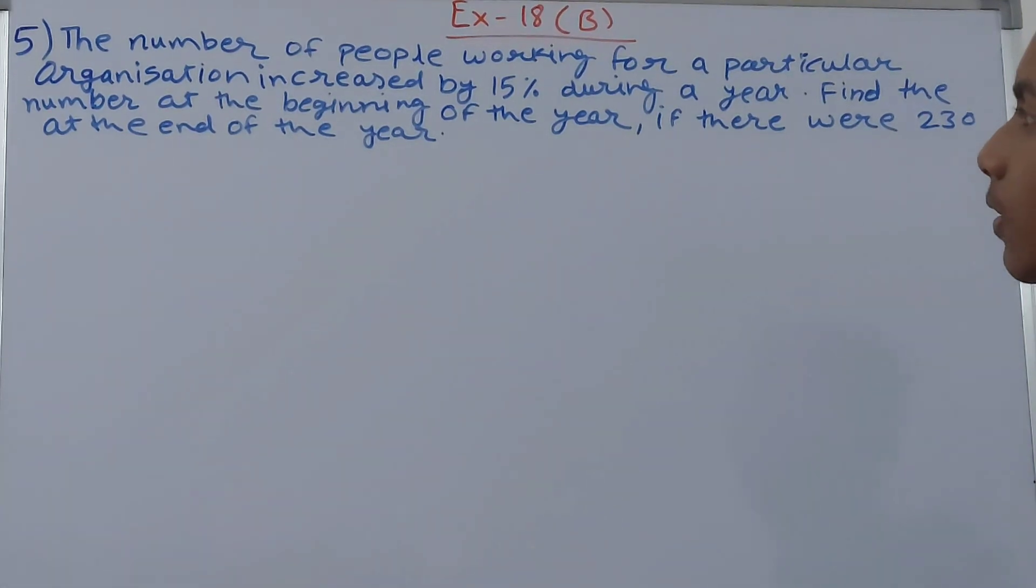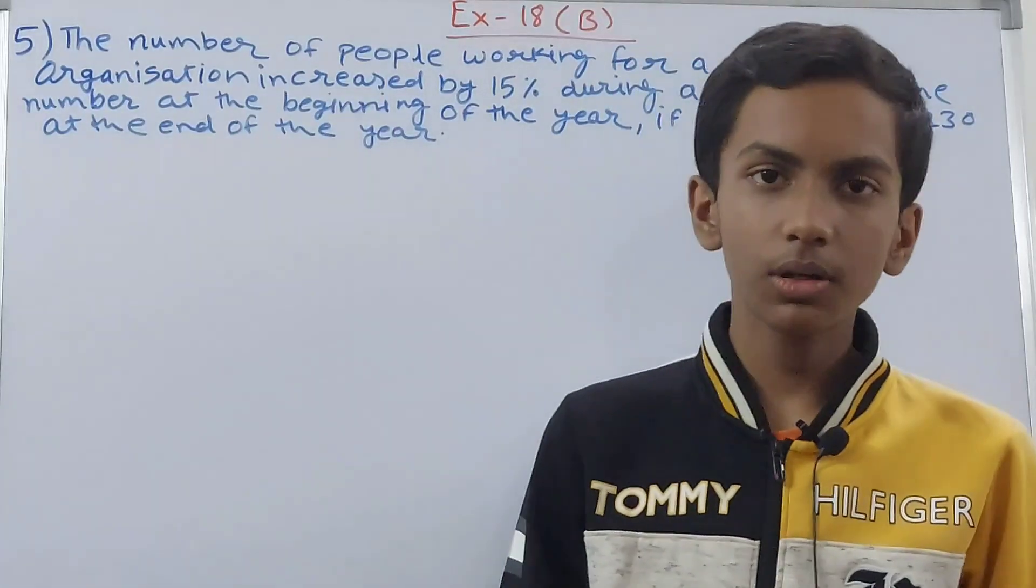This one says: The number of people working for a particular organization increased by 15 percent during a year. Find the number at the beginning of the year if there were 230 at the end of the year.